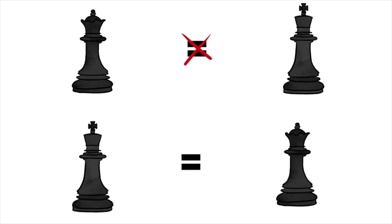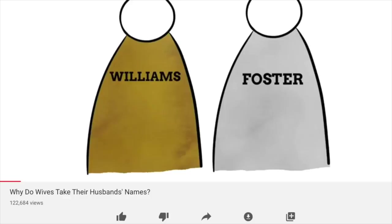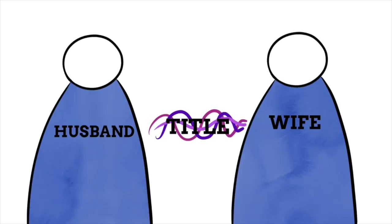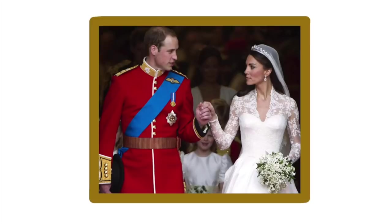The tradition goes: if the wife is the royal, then the husband does not become king. But if the husband is the royal, then the wife does become queen. Why is this? It's for much the same reason as why wives take their husband's surnames — traditionally, in English common law, the royal tradition is for a wife to take on the title of her husband.